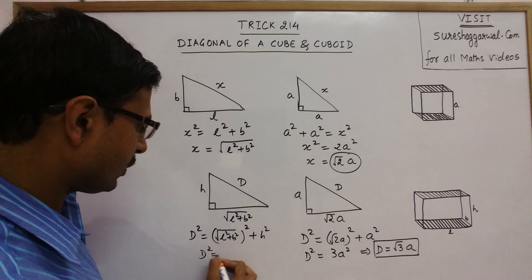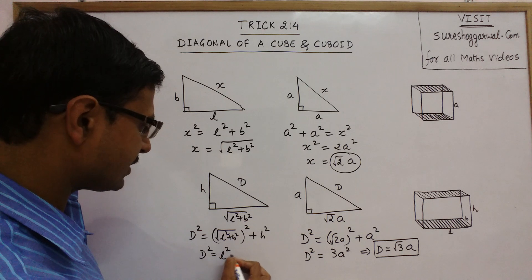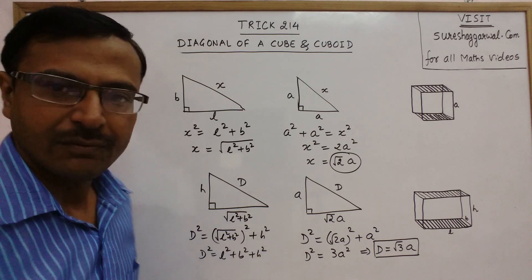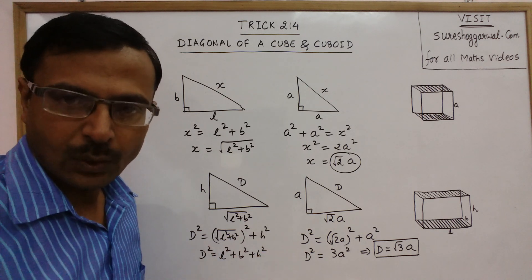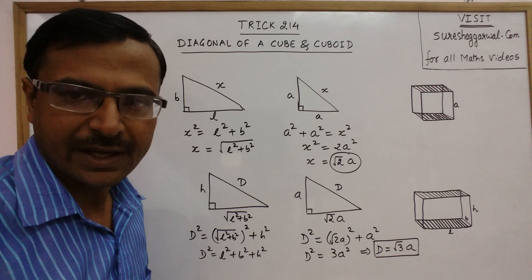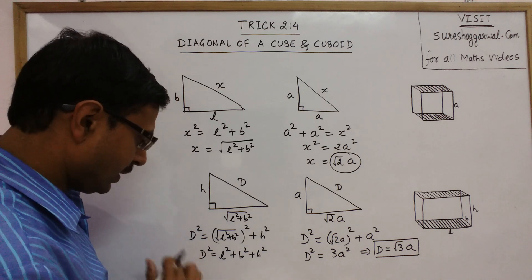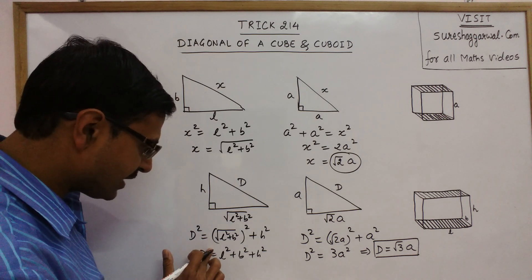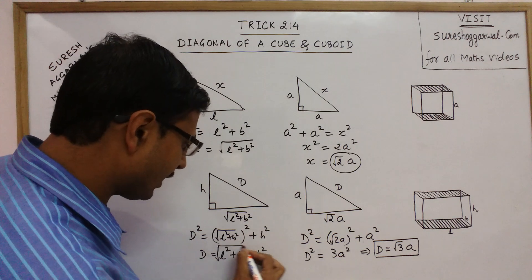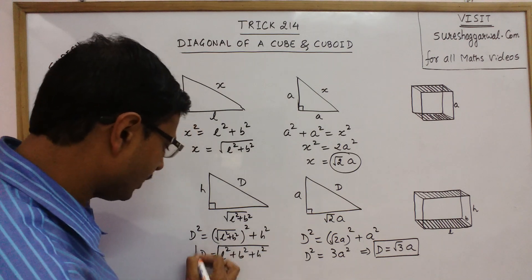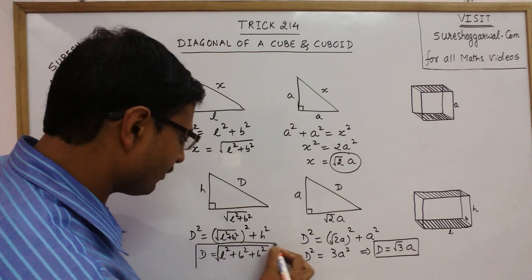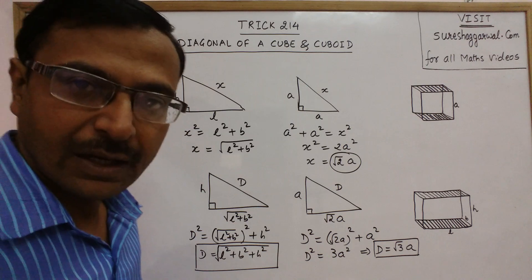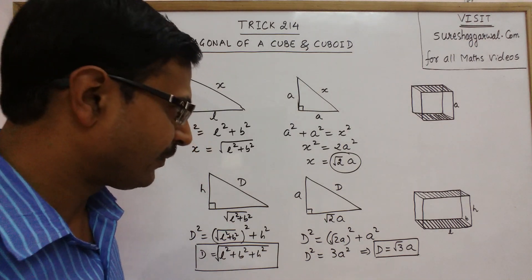So D² = L² + B² + H², which now gives us the expression for the diagonal. Cancelling the square, the entire thing comes under a square root. This is the formula for finding the diagonal of a cuboid: D = √(L² + B² + H²).